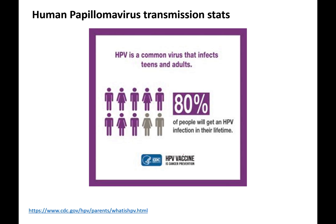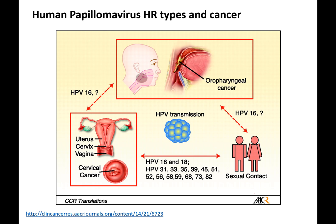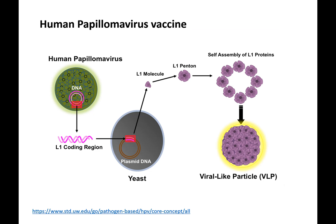Eighty percent of people will get an HPV infection in their lifetime. Transmission can occur through oral, anal, and vaginal sex, and there is a rising incidence of oropharyngeal cancer linked to changes in oral sex practices. The main types causing cervical cancer are 16 and 18. Importantly, we have a vaccine that can prevent not only the spread of HPV but also the prevention of cancer — that's the key to this vaccine.